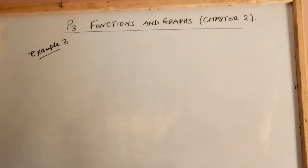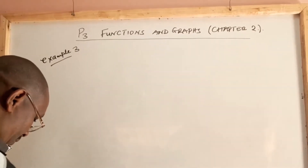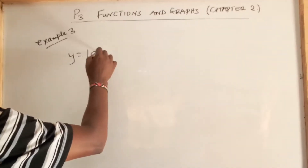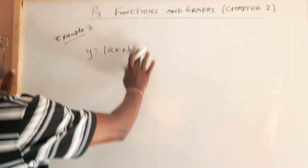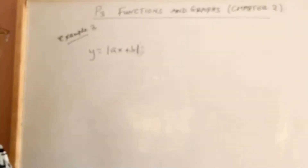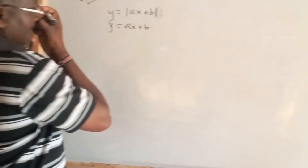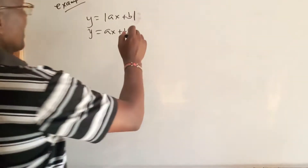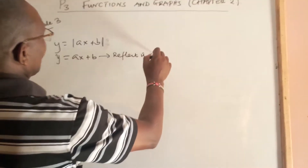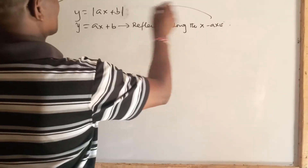We want to teach ourselves how to sketch the graphs of modulus. For example, to sketch the graph of y is equal to modulus of ax plus b, we need to first sketch the graph of y is equal to ax plus b originally, and then reflect it along the x-axis. We do this so that we can get the modulus.